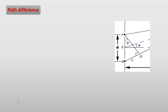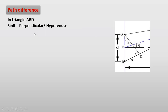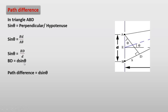Now we find the path difference from this diagram. In triangle ABD, sin θ = perpendicular/hypotenuse = BD/AB. BD is the path difference and AB is the slit separation d. So: sin θ = BD/d, which gives BD = d sin θ. Therefore, path difference = d sin θ.